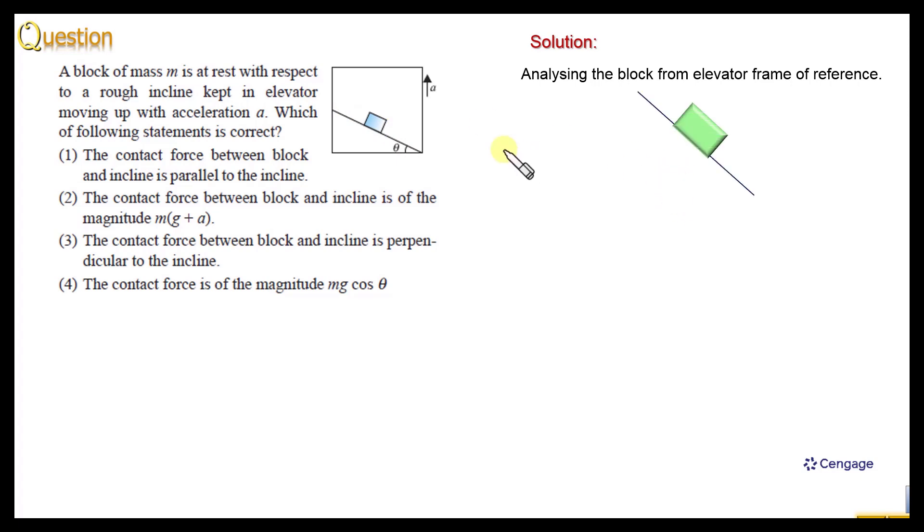Let us make the free body diagram of the block with respect to elevator frame of reference. The pseudo force on the block will act in the vertical downward direction opposite to the acceleration of the elevator.